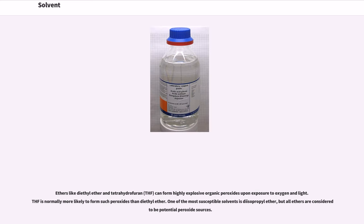Ethers like diethyl ether and tetrahydrofuran (THF) can form highly explosive organic peroxides upon exposure to oxygen and light. THF is normally more likely to form such peroxides than diethyl ether. One of the most susceptible solvents is diisopropyl ether, but all ethers are considered to be potential peroxide sources.